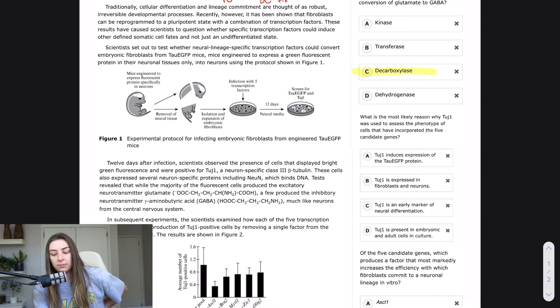D says TOOGE1 is present in embryonic and adult cells in culture. I don't know if that's true, but it's not saying what we were trying to say, which is that TOOGE1 is specific to neurons. C is saying that. And so it's the right answer.